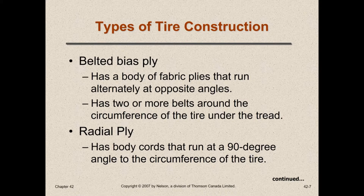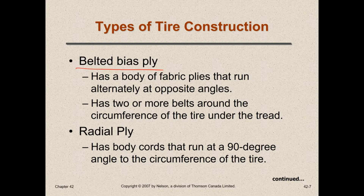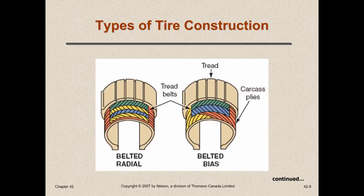Now we'll move on to tires — types of tire construction. We have belted bias ply tires and radial ply. Belted bias ply tires we don't really use anymore; they may be on some farm equipment but we've mostly moved over to radial ply. A bias ply tire has plies that run at about 90 degrees to one another, layered together like that. That's belted bias ply.